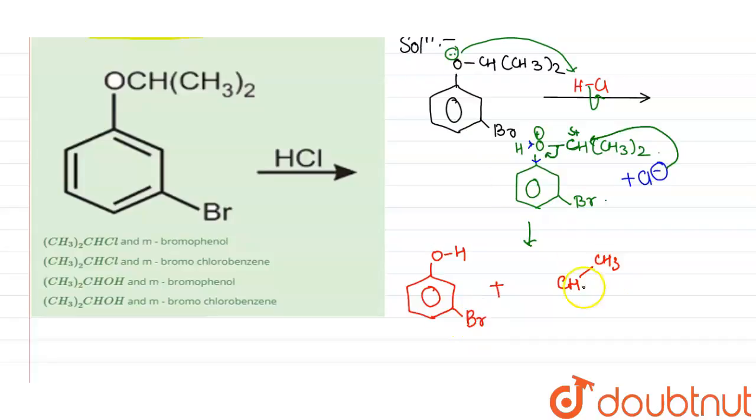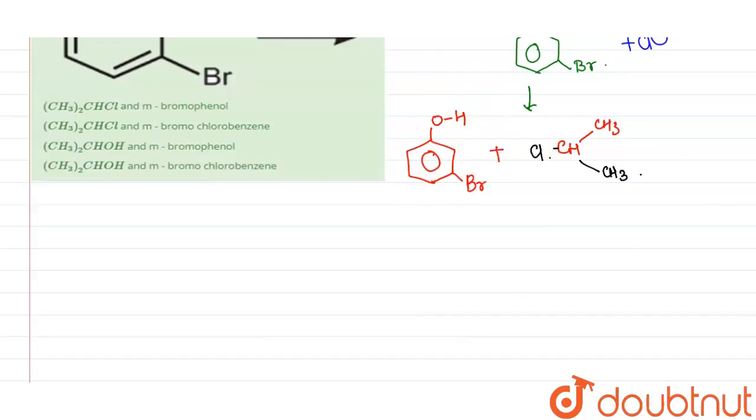here it will be bromine too. Here it is CH3. Here it is CH3. And again a Cl will come and attack here. So now, these are the two products that we have got.